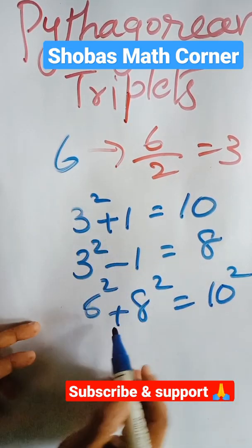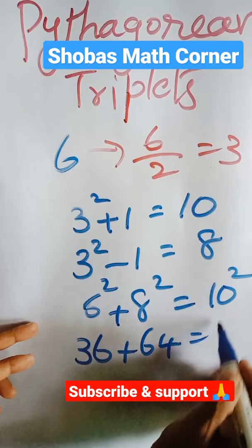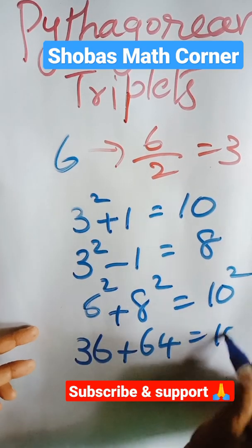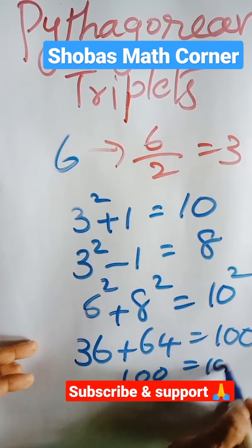That is 6 square. 6 square is 36 plus 8 square is 64. When I'm adding these two, I'll be getting 10 square, that is 100. 64 plus 36 is 100. 100 is equal to 100.